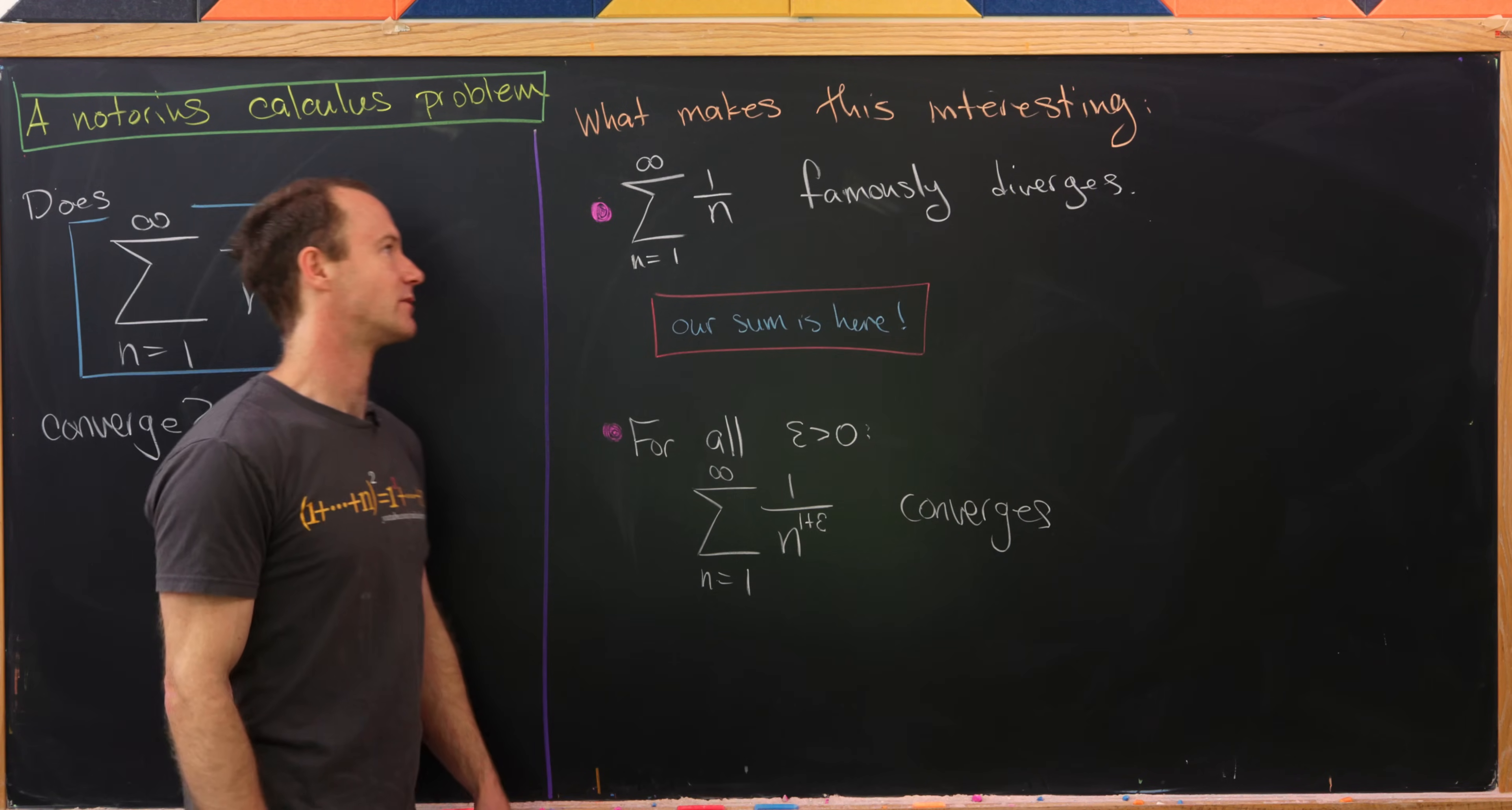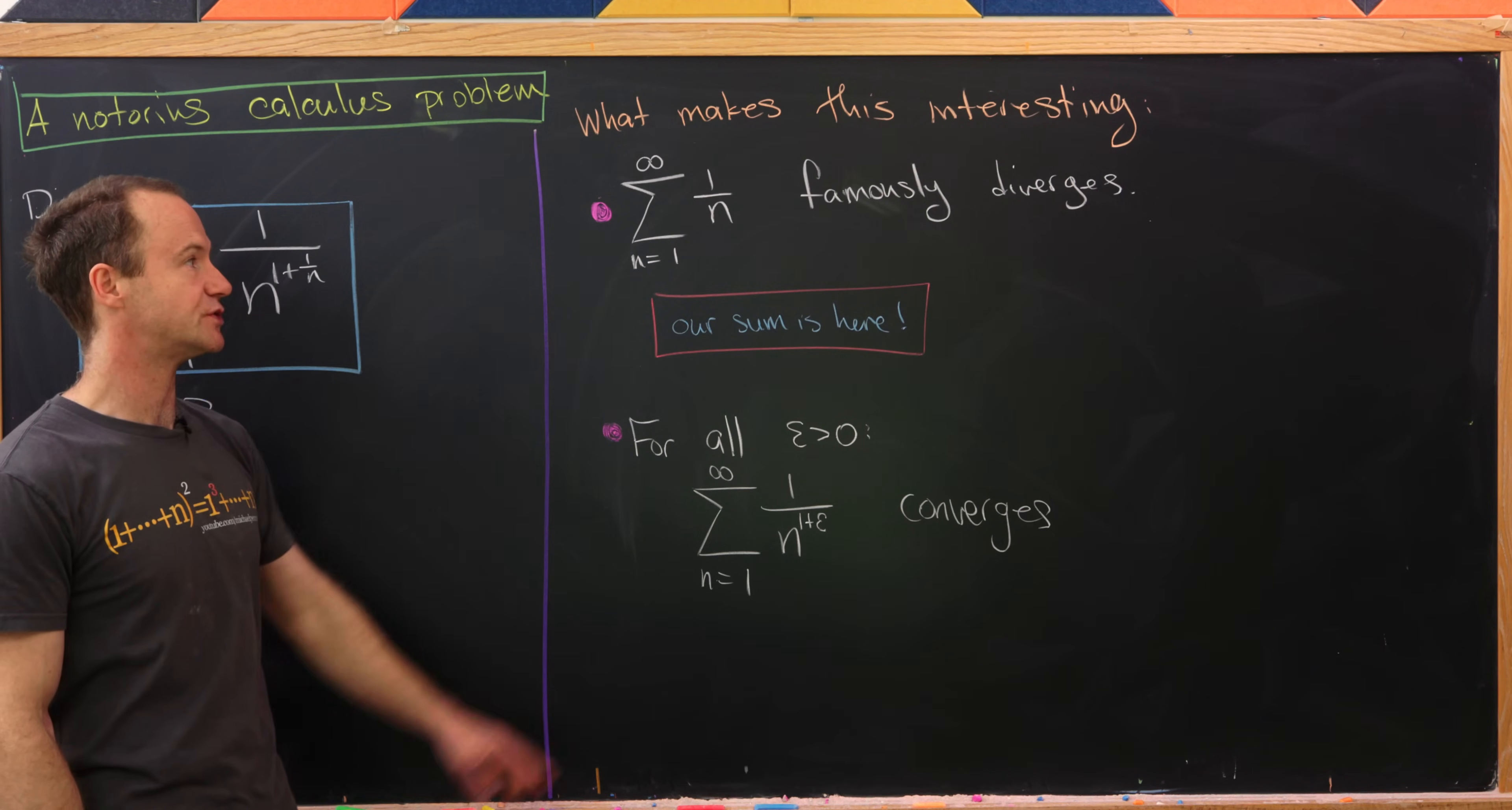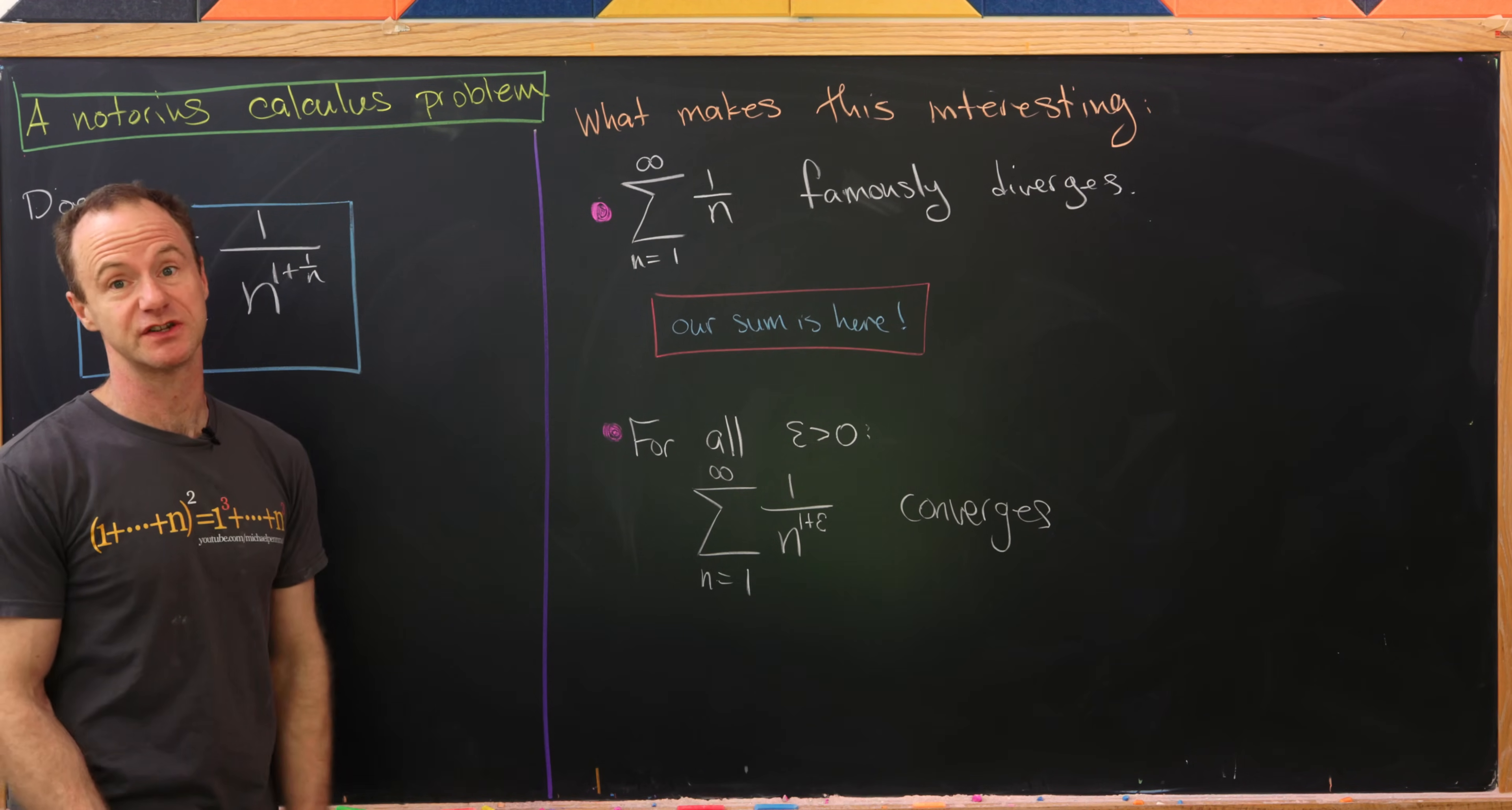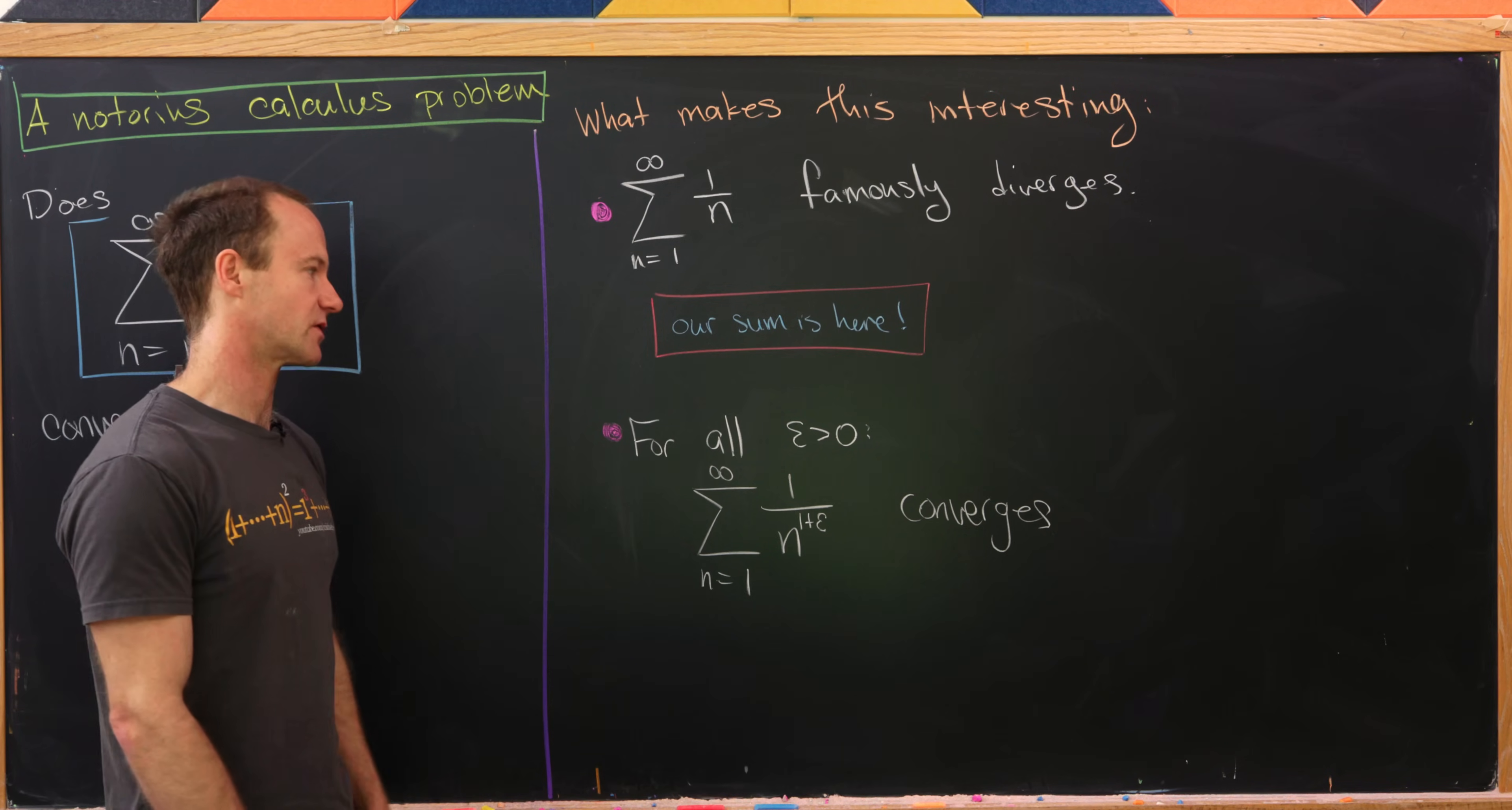And what makes this problem interesting? Well, the harmonic series, in other words the sum as n goes from 1 to infinity of 1/n, it famously diverges. And so this is the sum that really rubs calculus students the wrong way. Everyone feels like this should converge but it in fact does not converge.